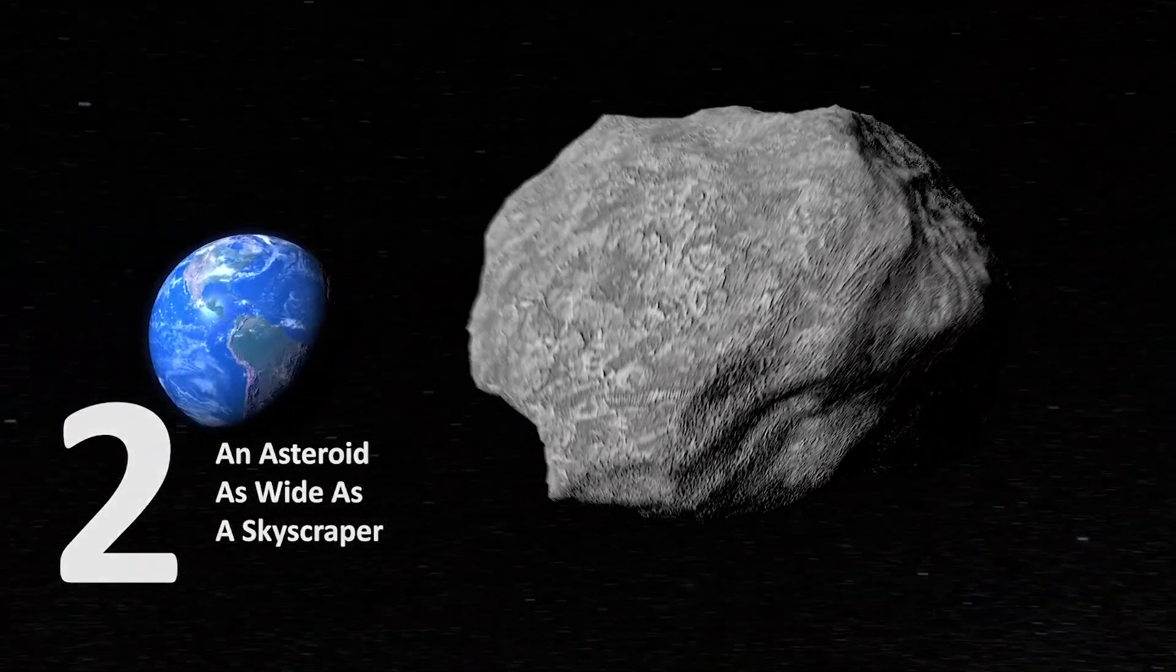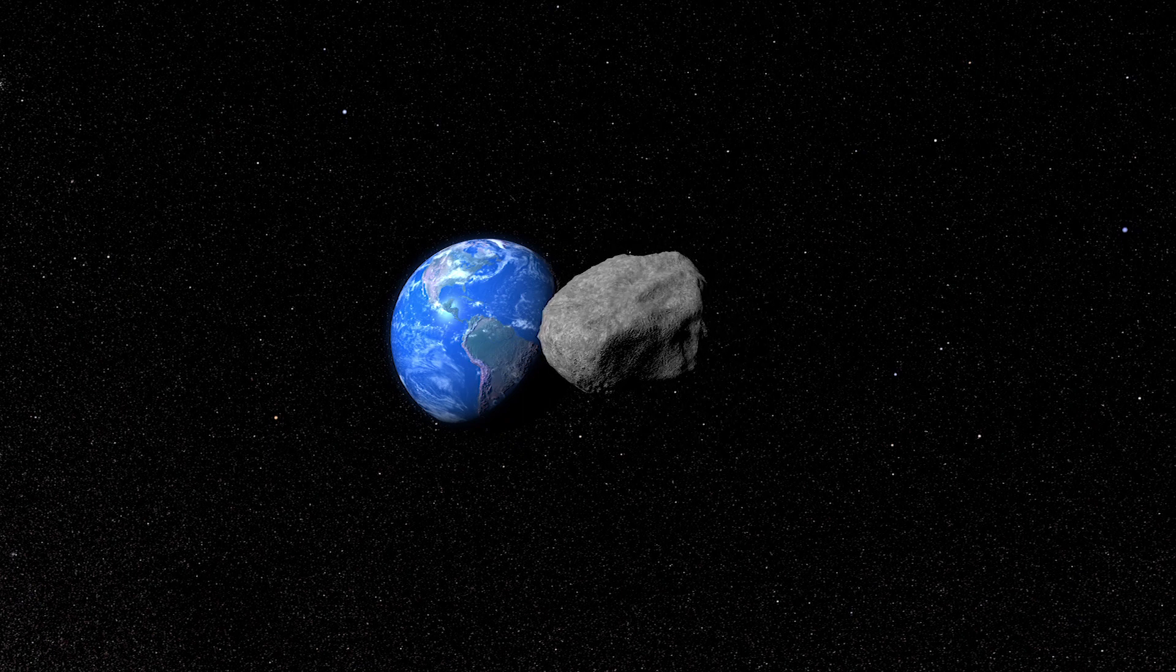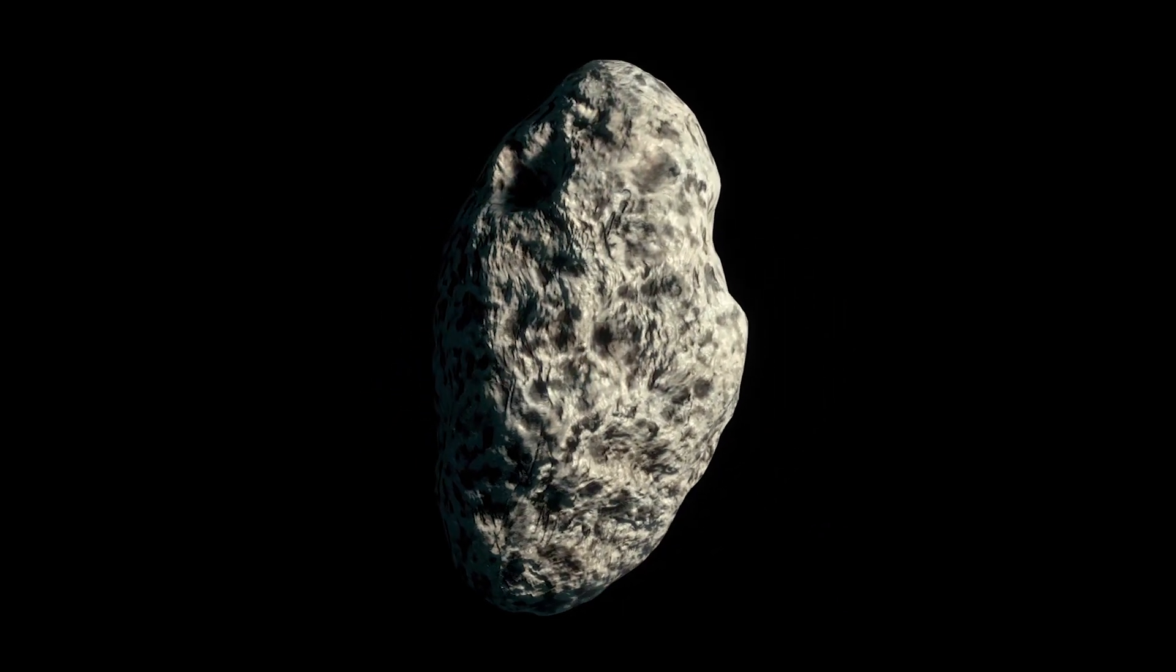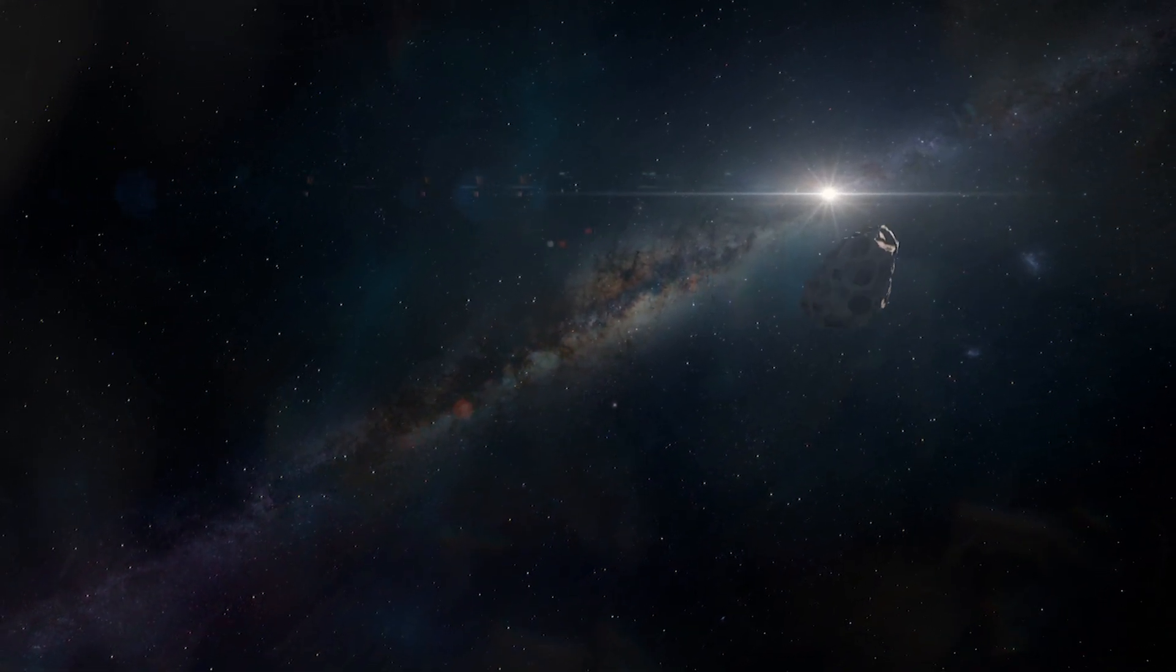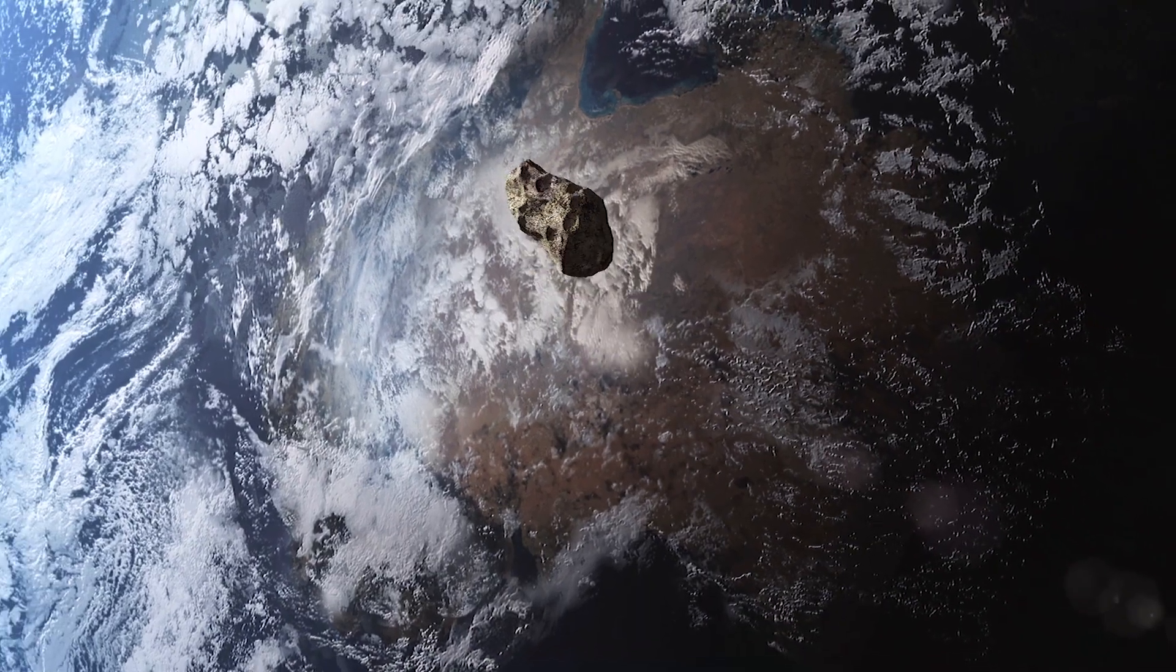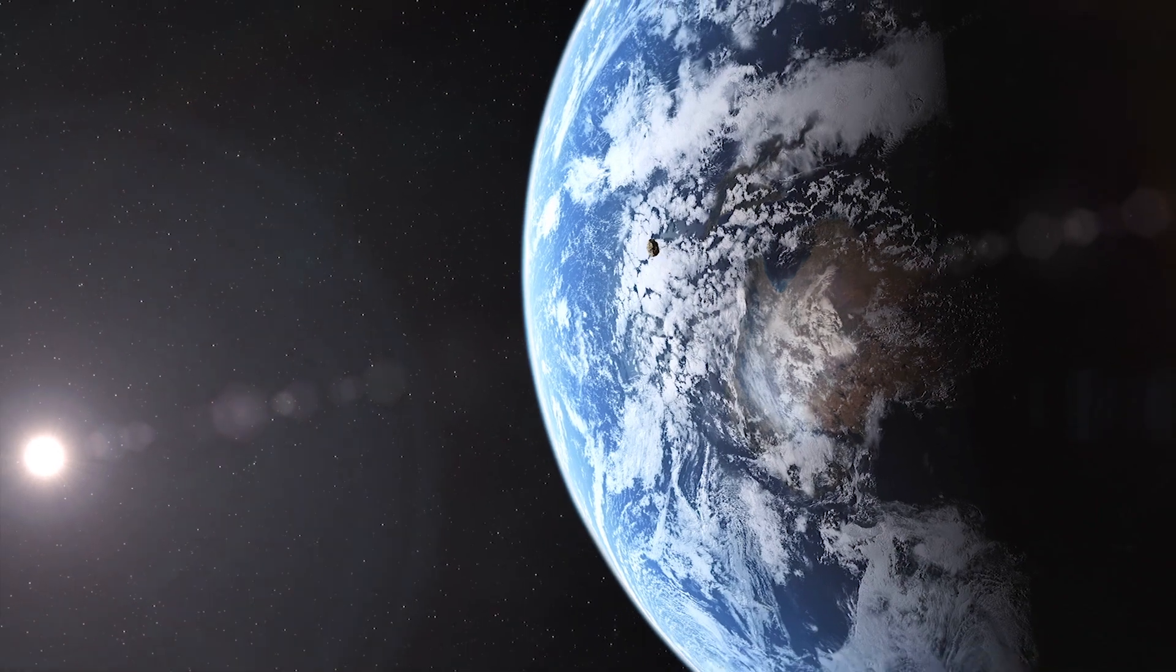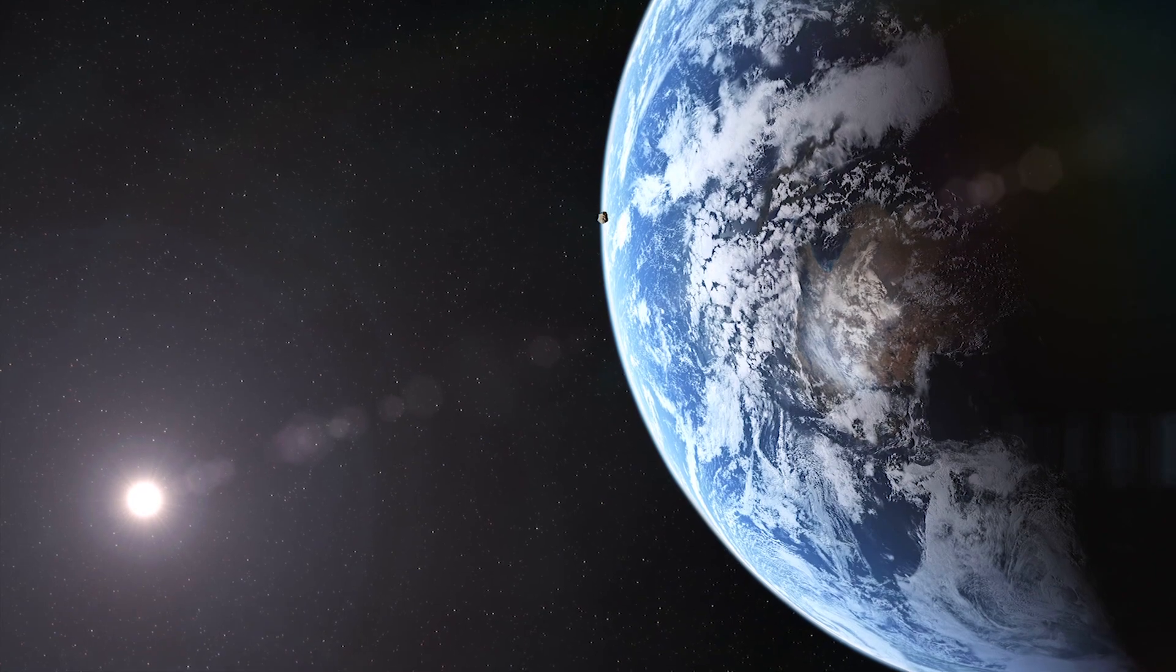In September, a space rock as wide as a skyscraper is tall zoomed past Earth. The asteroid, known as 2000-QW7, is between 300 to 600 meters wide and passed by our planet moving at about 23,100 kilometers per hour. The giant asteroid posed no threat to us, but NASA has kept track of the rock since 2000 and it still is. It will next drift near Earth on October 19, 2038.